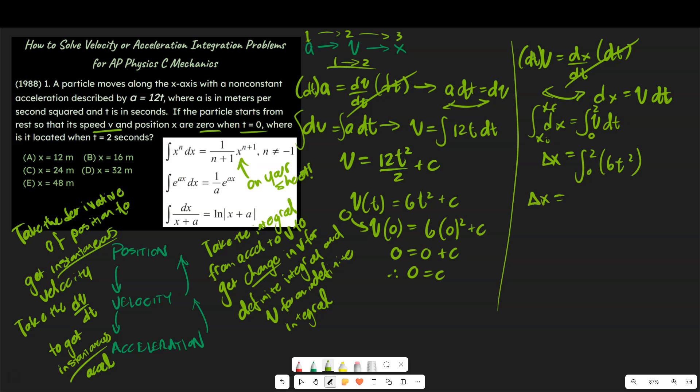And so you could say delta x is equal to 6t to the third over 3 evaluated from 0 to 2. So our delta x is going to be equal to, notice this cancels to 2, so we're going to have 2 times 2 to the third minus 2 times 0 to the third. That is 16.